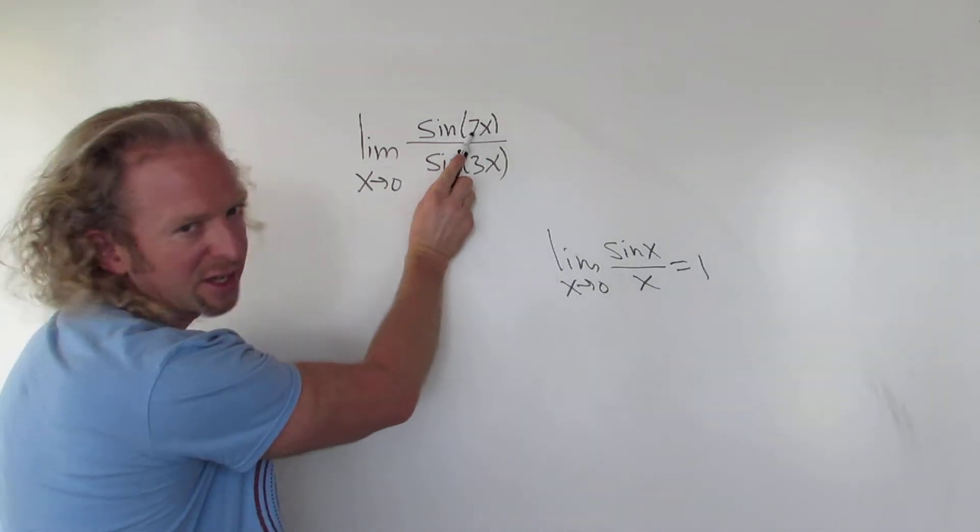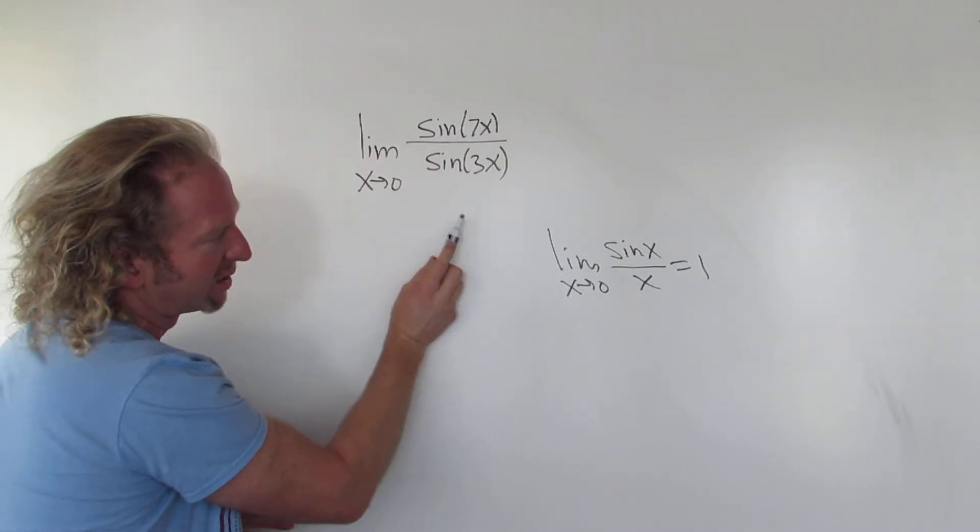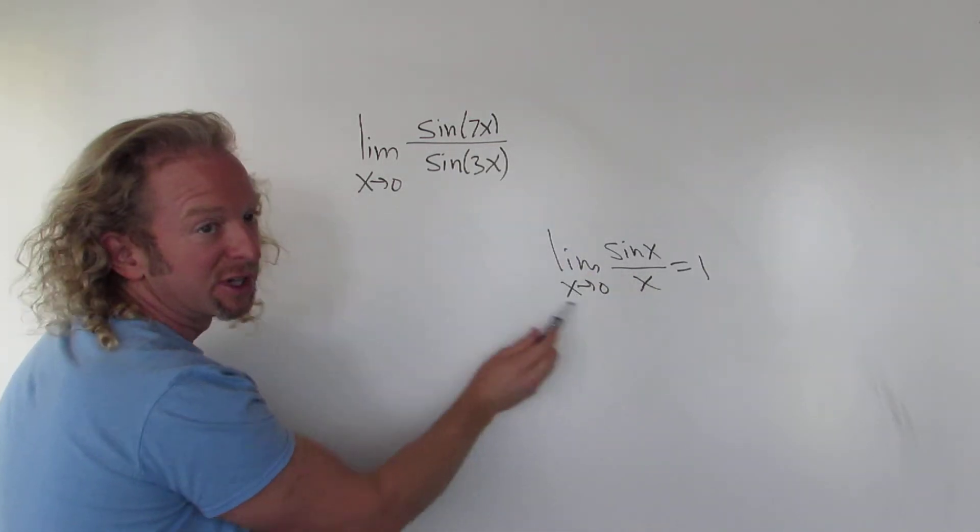So the idea is that here we have a sine 7x, and we would like to have sine 7x over 7x. Because whenever these match, this limit is equal to 1.